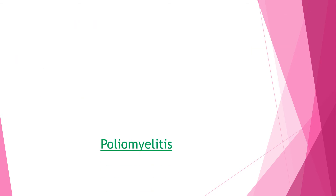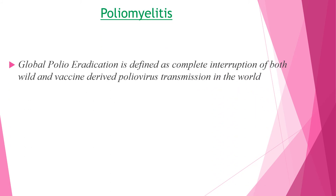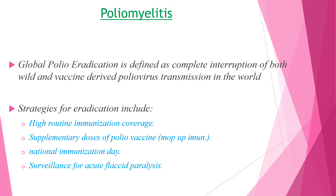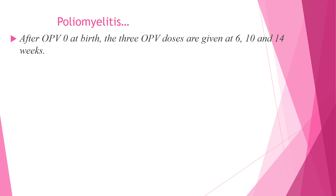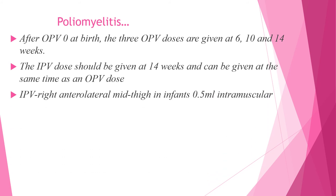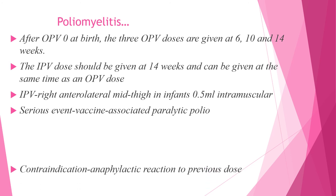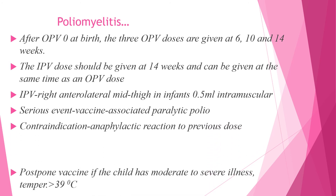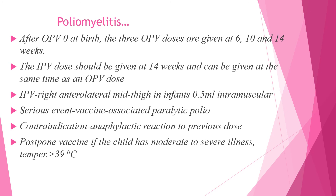Another component of the EPI schedule is poliovirus vaccine. Global polio eradication is defined as completed interruption of both wild and vaccine-derived poliovirus transmission. Strategies for eradication include high routine immunization coverage, supplementary doses of polio vaccine or mop-up immunization, national immunization days, and surveillance for acute flaccid paralysis. After OPV-0 at birth, three OPV doses are given at 6, 10, and 14 weeks. IPV should be given at 14 weeks and can be given at the same time as OPV-3. IPV is administered in the right anterolateral thigh with a dose of 0.5 ml intramuscularly. Serious events include vaccine-associated paralytic polio. Contraindication is anaphylactic reaction to a previous dose. Postpone if the child has moderate to severe illness with temperature greater than 39 degrees Celsius.